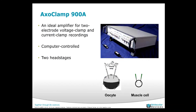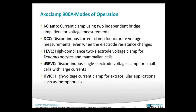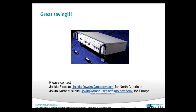I want to introduce a little bit about the AxoClamp 908. The 908 is an ideal amplifier for two-electrode voltage clamps and current clamp recording — for example, for oocytes and muscle cells. It is computer-controlled with two headstage inputs. With the AxoClamp 908, we can do not only two-electrode voltage clamp, but also current clamp, discontinuous current clamp for accurate voltage measurement, and discontinuous single-electrode voltage clamp for small cells with large current. You can also use the 908 for ion-to-fluorescence recordings. In this seminar we also offer great savings to all audience members — if you are in North America, please contact Jackie Flowers, and if you are in Europe, please contact Victor for this great saving opportunity.